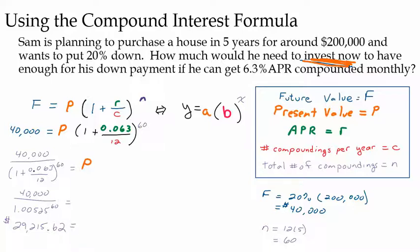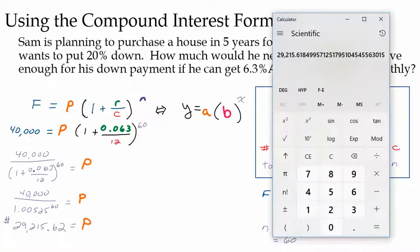So I should be safe without using parentheses. So I get $29,215.62. And that would be the present value. That would be what I would have to invest right now in order to come up with $40,000 five years from now. So this money would just sit in there and earn interest and it would be worth $40,000 after that amount of time, five years.